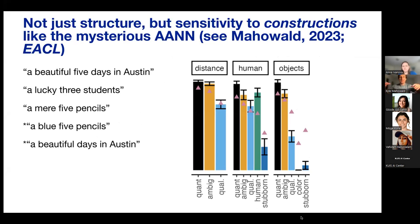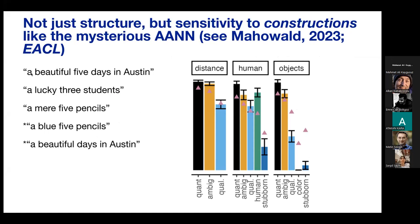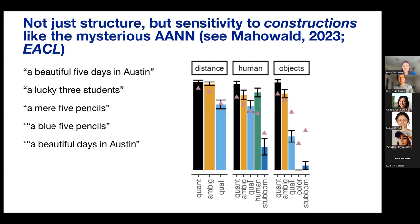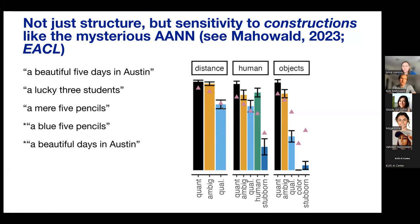This is true even for constructions, not just long-distance or hierarchical structure. A recent paper looked at how GPT-3 does with the construction 'a beautiful five days in Austin' — a strange, rare construction in English where the singular 'a' takes the plural 'days' and you reverse the order of the numeral and adjective. It's generalizable to some instances like 'a lucky three students' or 'a mere five pencils,' but certain adjectives don't allow it — you can't say 'a blue five pencils.' Looking at GPT-3's ratings versus human ratings, you get really subtle, fine-grained agreement, suggesting it's learning interesting kinds of linguistic structure even for very rare constructions.